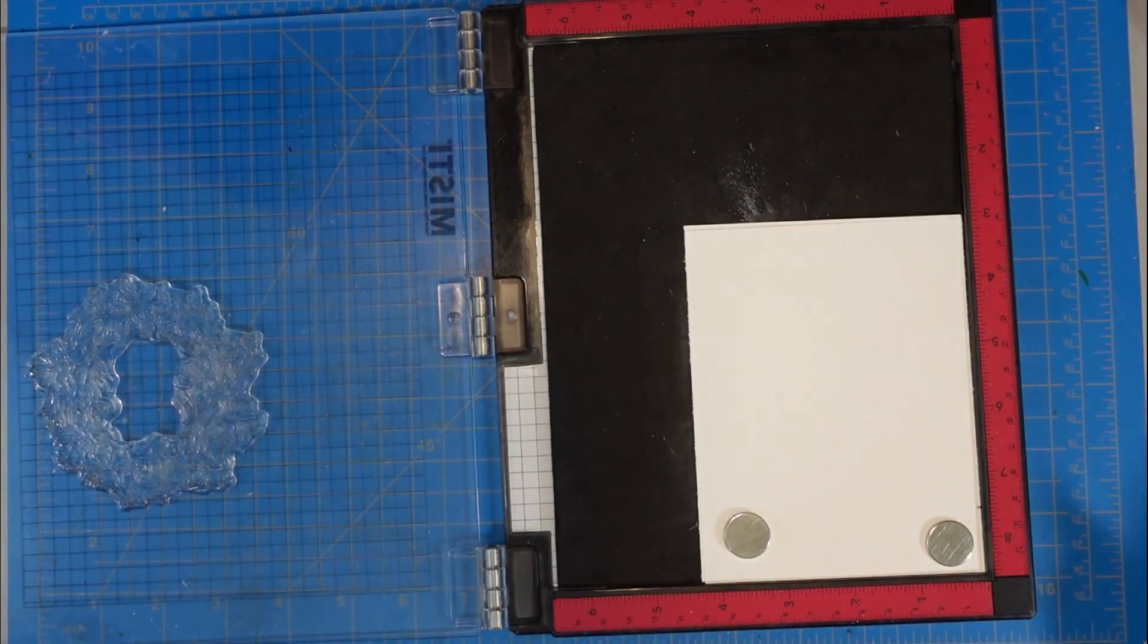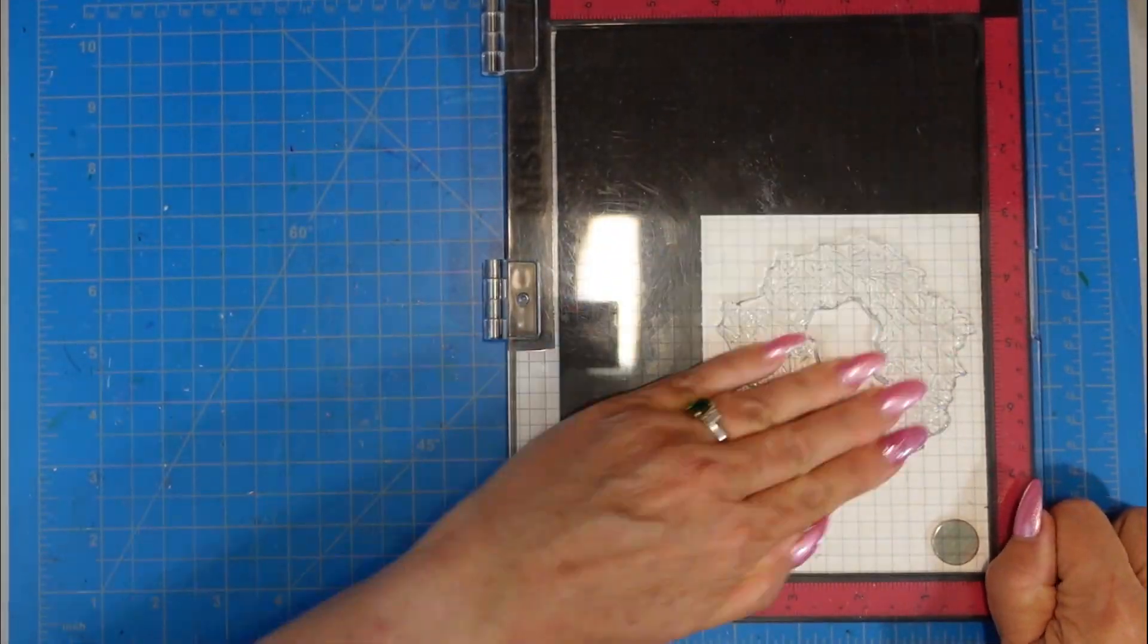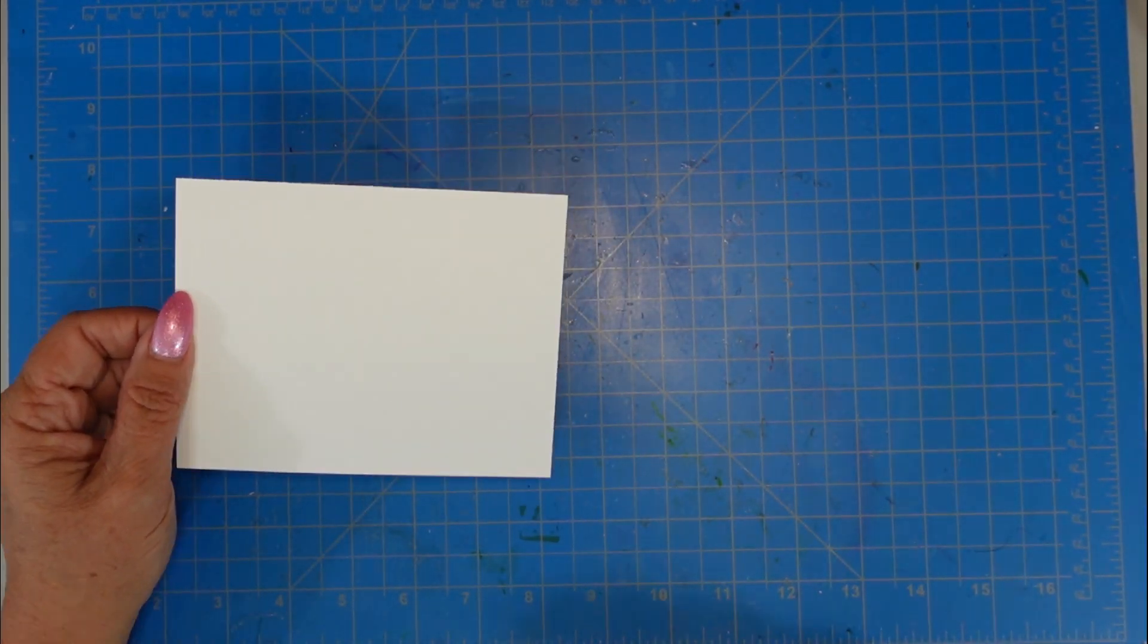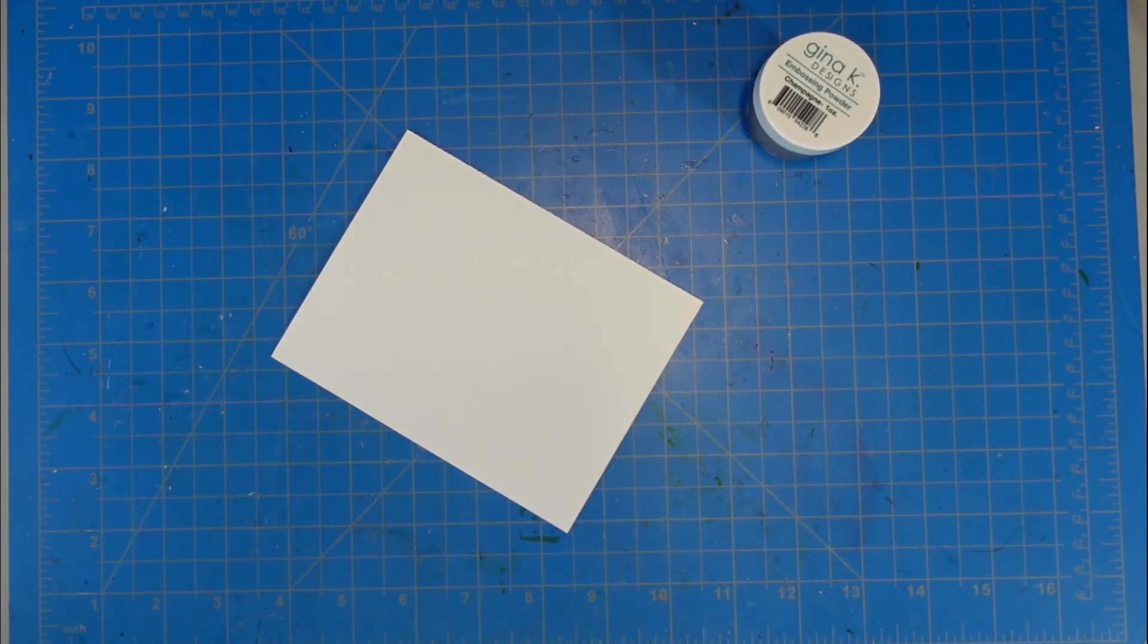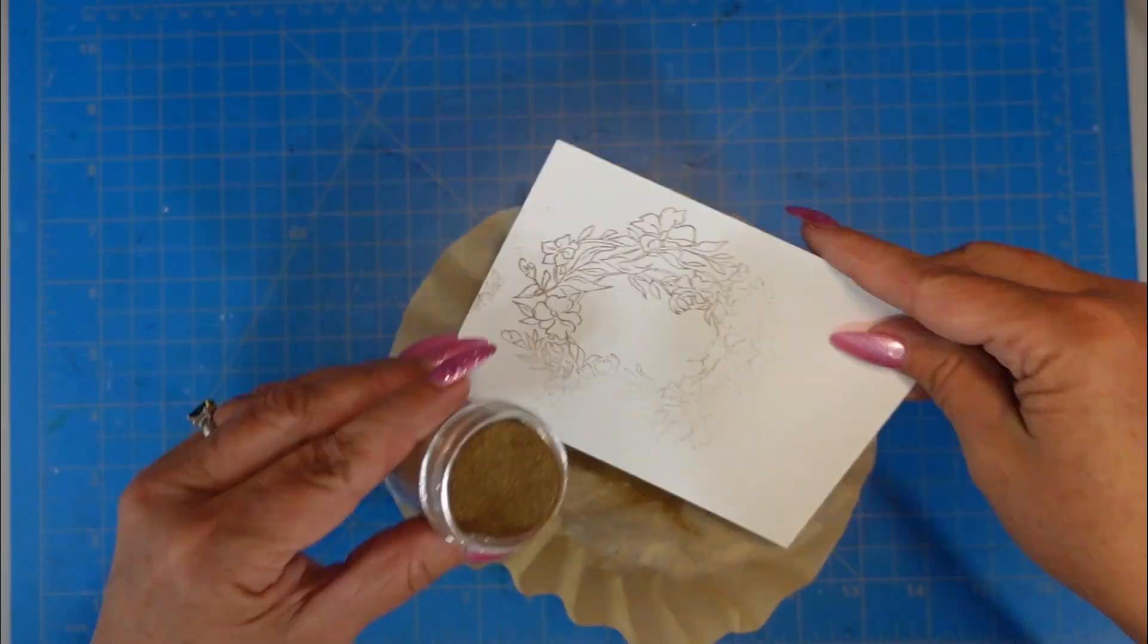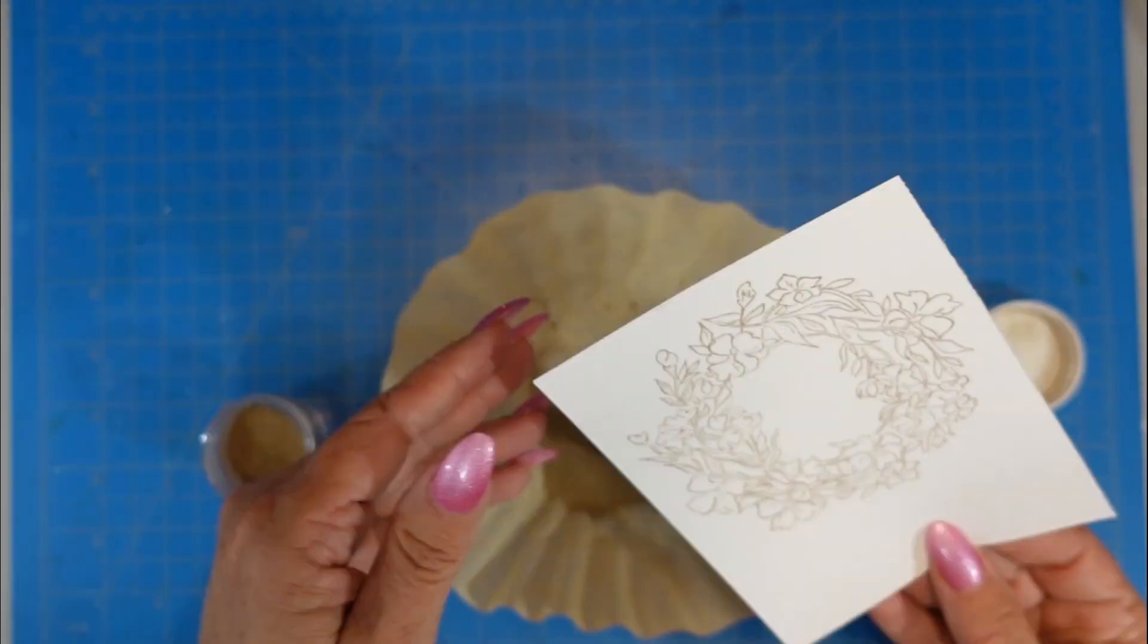I have a piece of Neenah Solar White 80-pound cardstock in my Misti, about 4 1/4 by 5 1/2, but I am going to use that coordinating wreath die to cut out my wreath. We're doing heat embossing, so my heat tool is over to the left and I've been heating it up while I was doing my stamping. Here I'm using some Gina K Designs Champagne Embossing Powder.